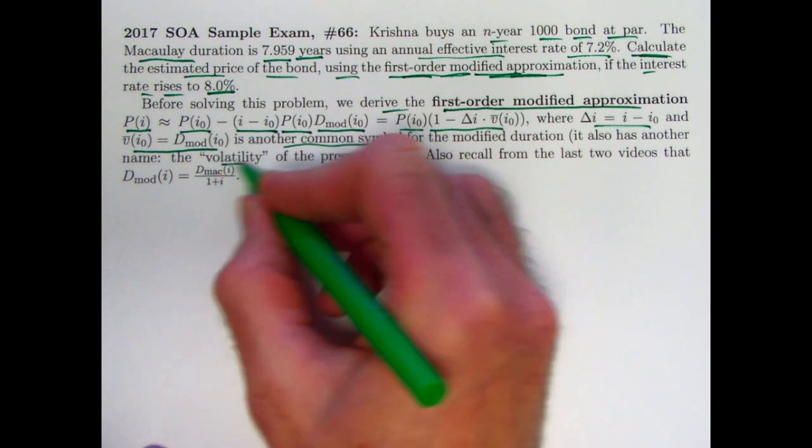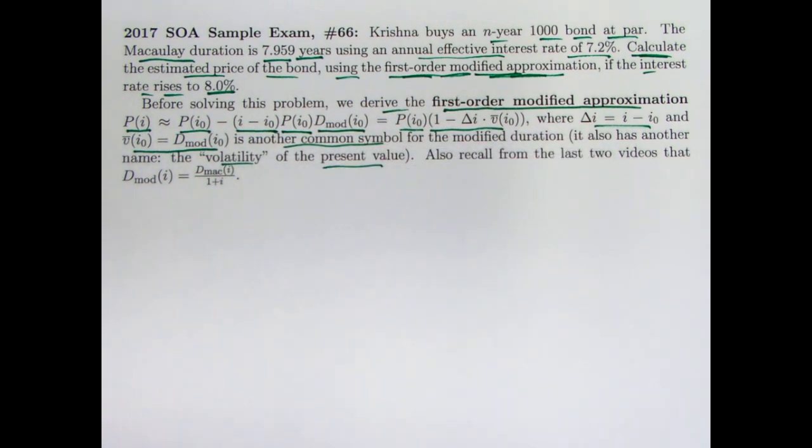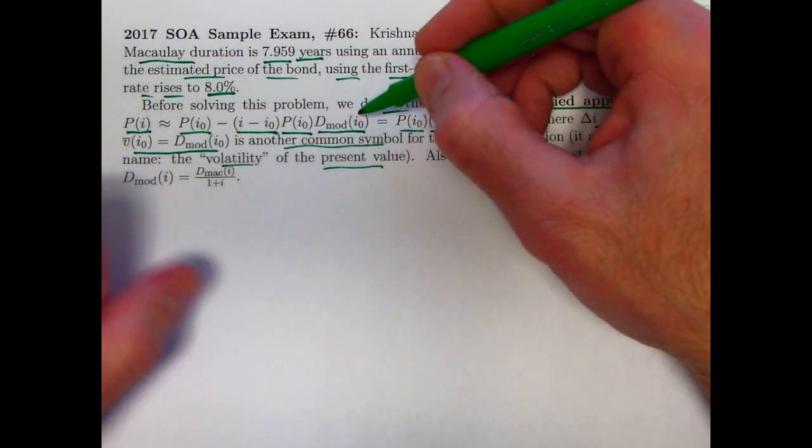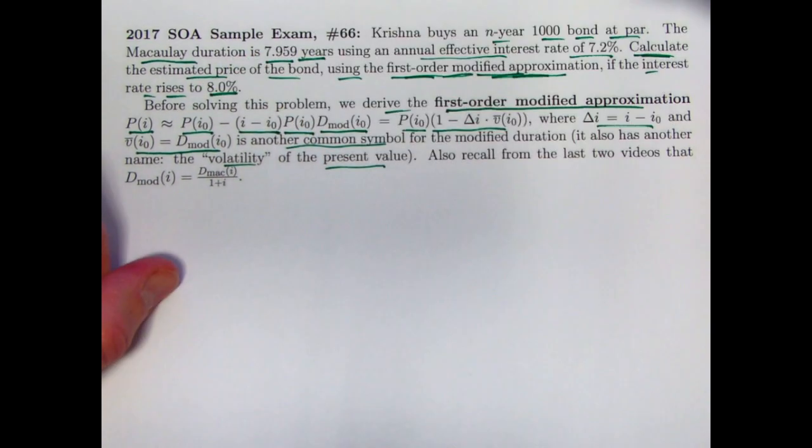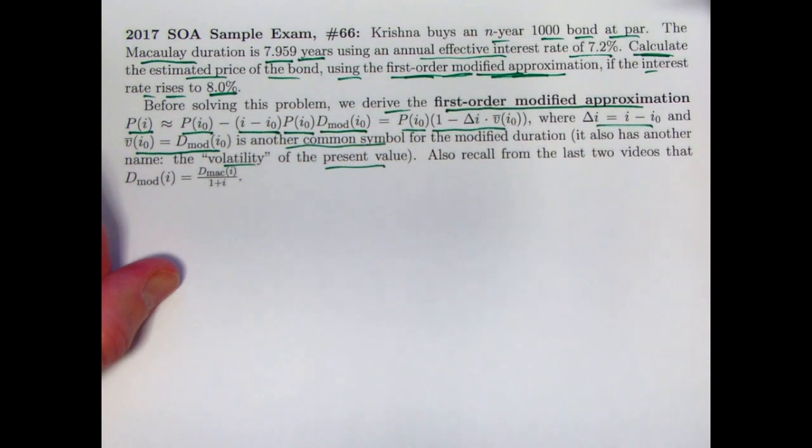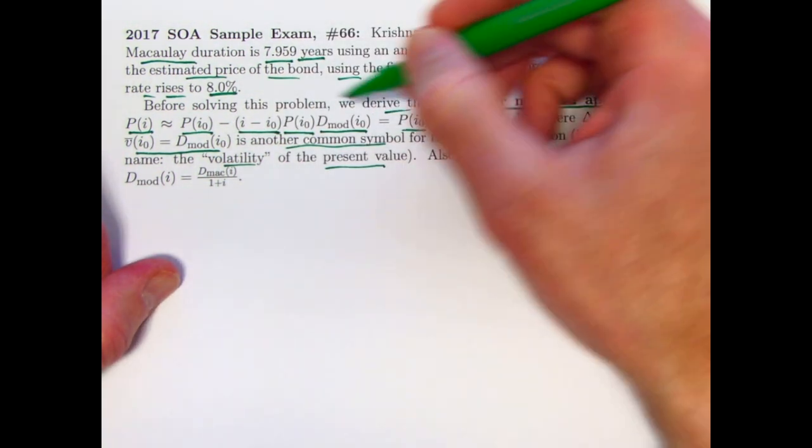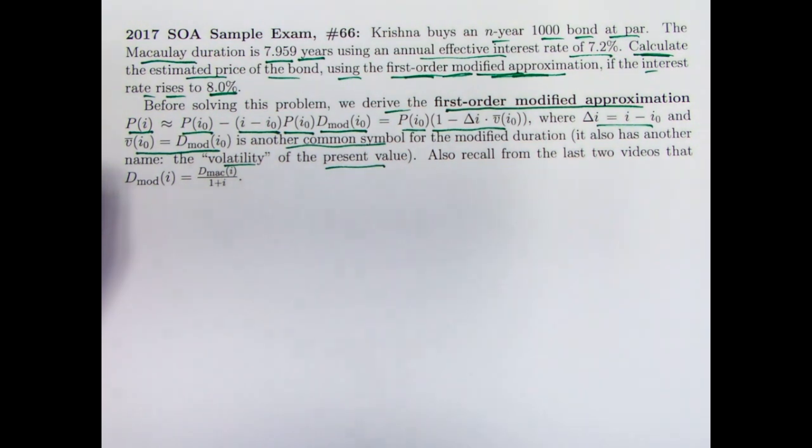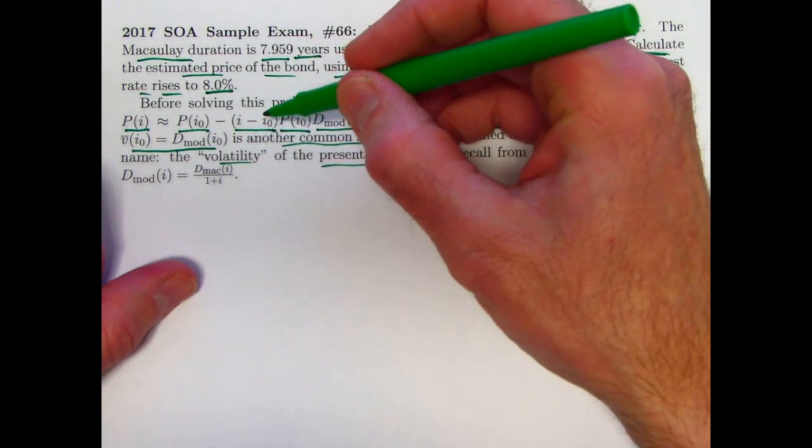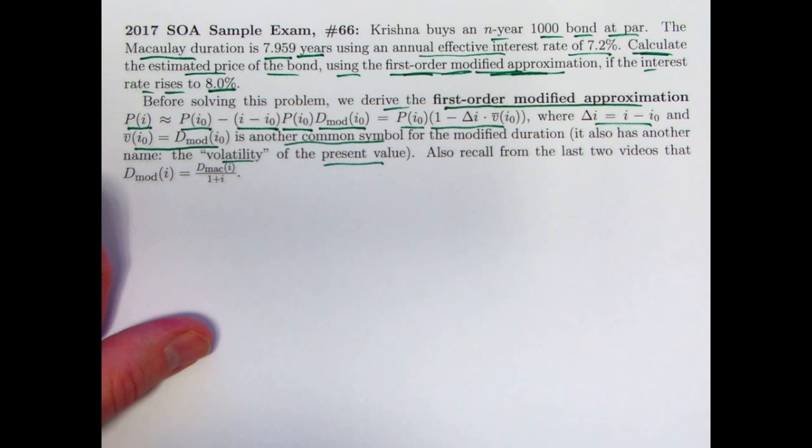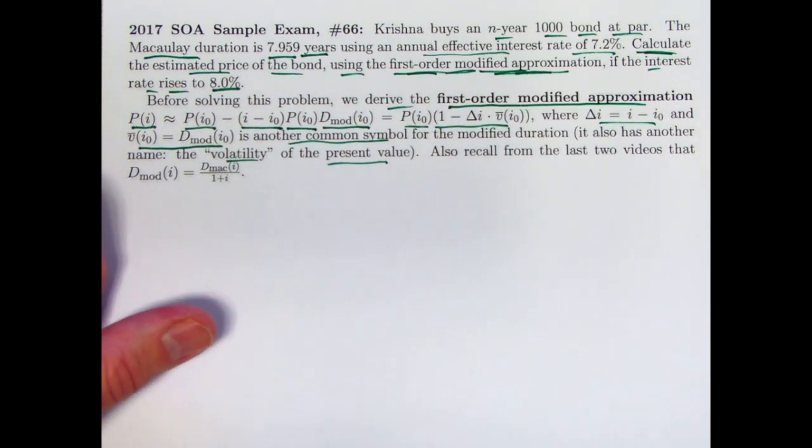It also has another name, it's called the volatility of the present value. And why is it called the volatility? Because the size of the modified duration affects how much the price changes. The bigger the modified duration is, the bigger this quantity is going to be. The bigger the quantity that you're subtracting could be positive or negative, depending on the change in i, but it affects the price more when the modified duration is greater. That's the key. That's why it's related to this duration risk. The larger the duration, the greater the price change is going to be for a given change in interest rate.